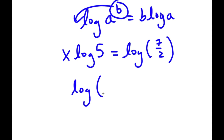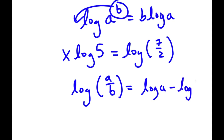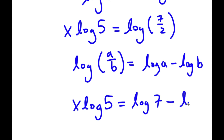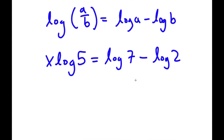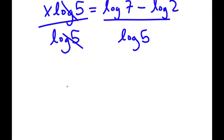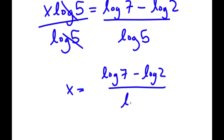Now if I have something in the form log a over b, this is equal to log a minus log b. So log 7 over 2 is going to equal log 7 minus log 2. Now I'm going to divide both sides by log 5, so these cancel out and I get x is equal to log 7 minus log 2 over log 5.